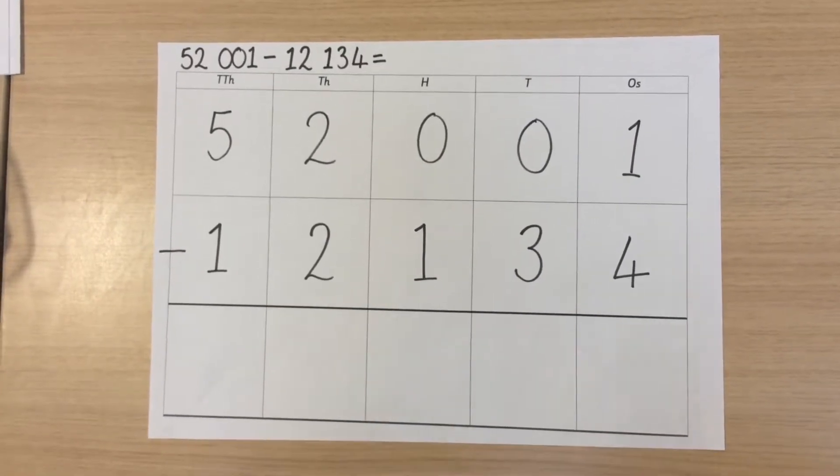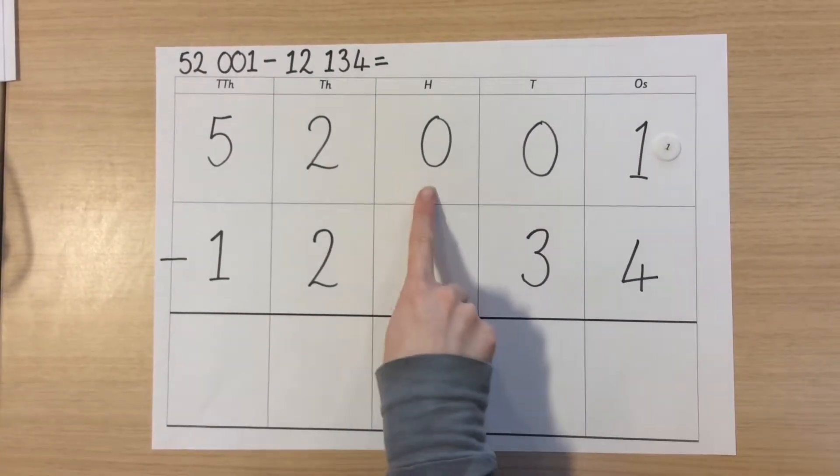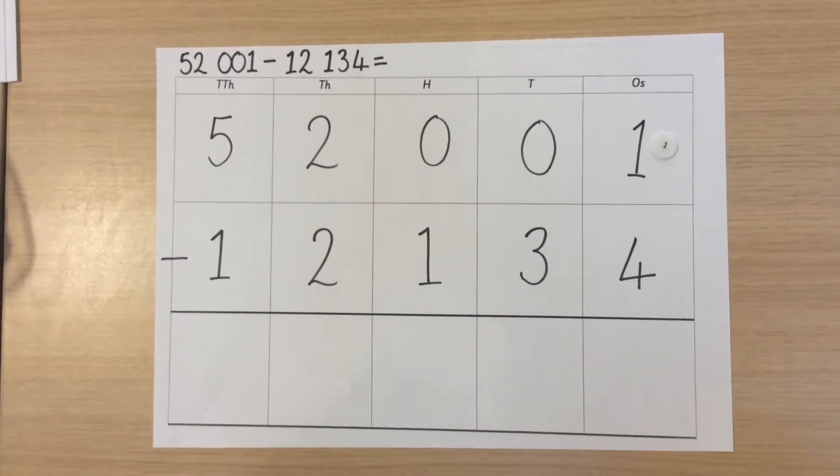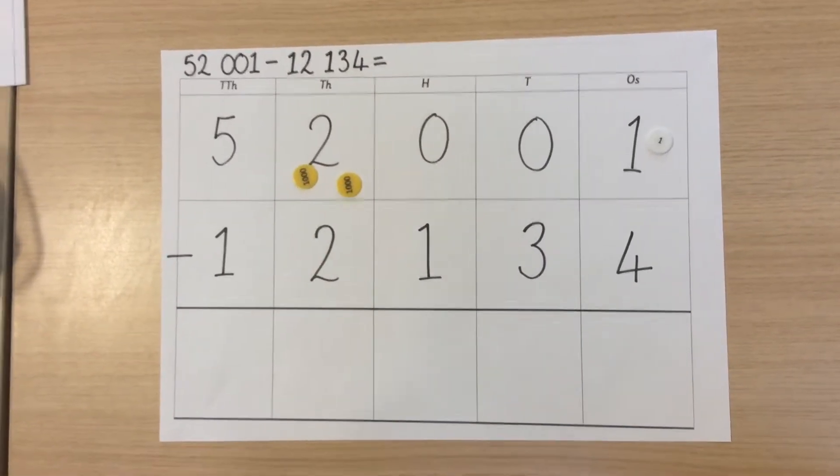So in this case we need one one. We do not need any tens or hundreds. Instead we have place value holders and we need two thousands and five ten thousands.